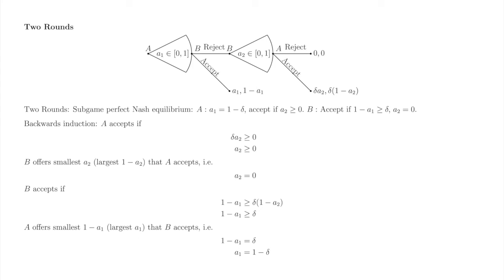Now let's do backwards induction to find the subgame perfect Nash equilibrium. A accepts if A's payoff from accepting, delta times A2, is at least as good as A's payoff from rejecting, 0. Division by delta is legal because delta is never 0. B makes A a minimally acceptable offer, which we represent by A2 equals 0.